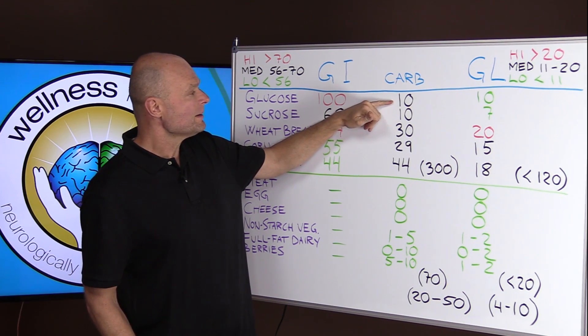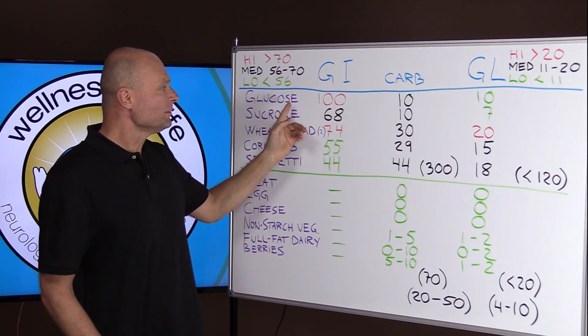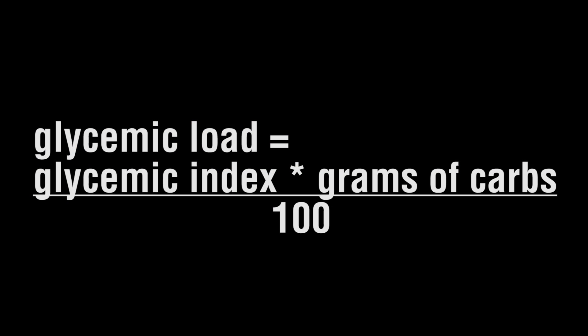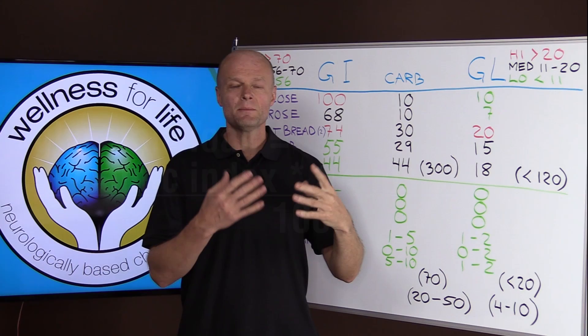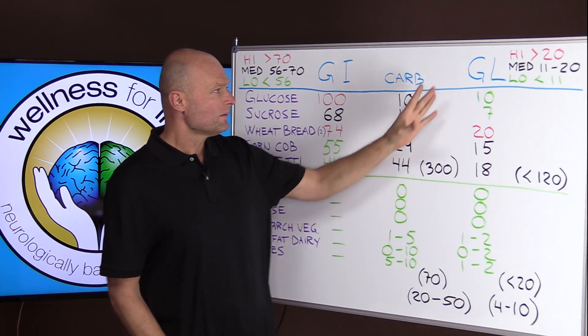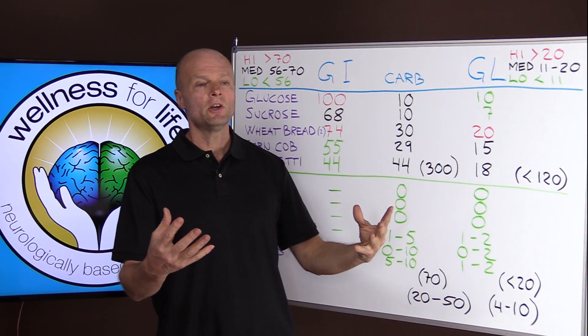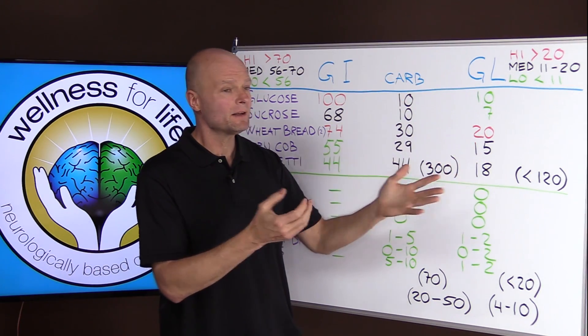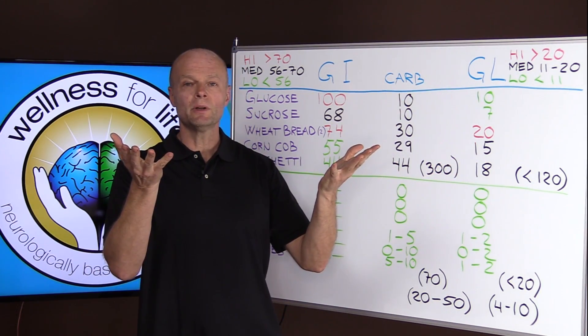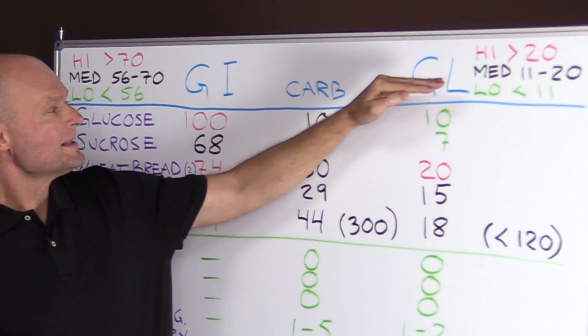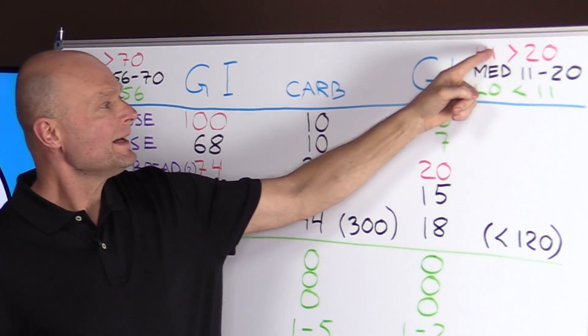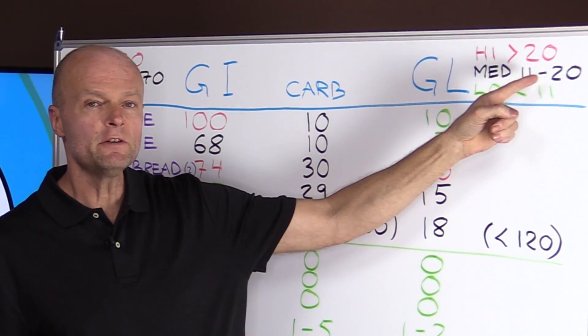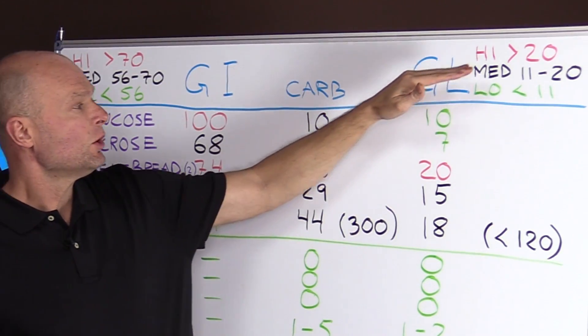So that would give it 10 grams of carbs, and then you multiply the glycemic index by the number of carbs, and you end up with the glycemic load. So now you have a measurement of how much, not just how quickly would a certain amount enter your bloodstream, but how much of an impact does it have on your overall blood sugar. Then they say that a glycemic load, a high glycemic load per serving, is over 20.